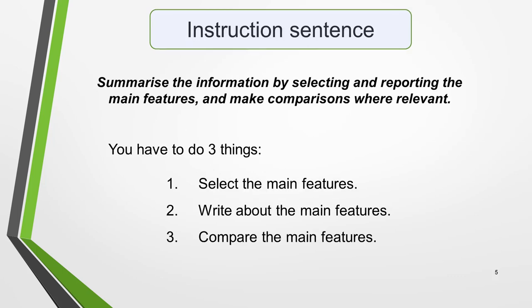So let's analyse what you have to do. For this we need to look at the instruction sentence, which will always be exactly the same: summarise the information by selecting and reporting the main features and make comparisons where relevant. It tells you to do three things: select the main features, write about the main features, and compare the main features. This is the same for every question and every type of graphic.